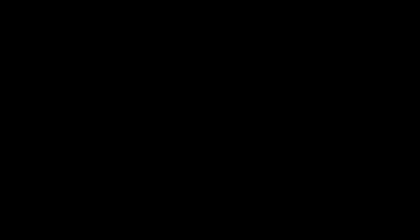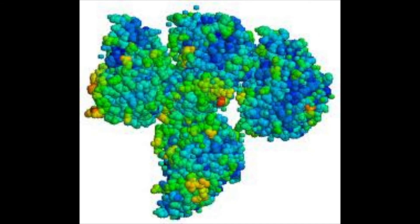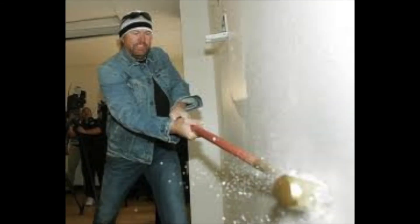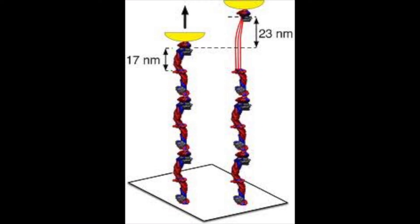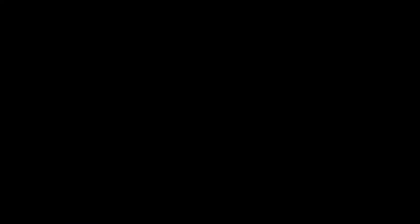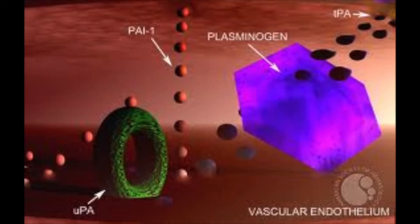That's my friend Plasmin. What it does is break down things. It loves to break down fibrinogen and fibrin, and it likes to break down coagulation factors. It destroys things. Fibrinolytic system.